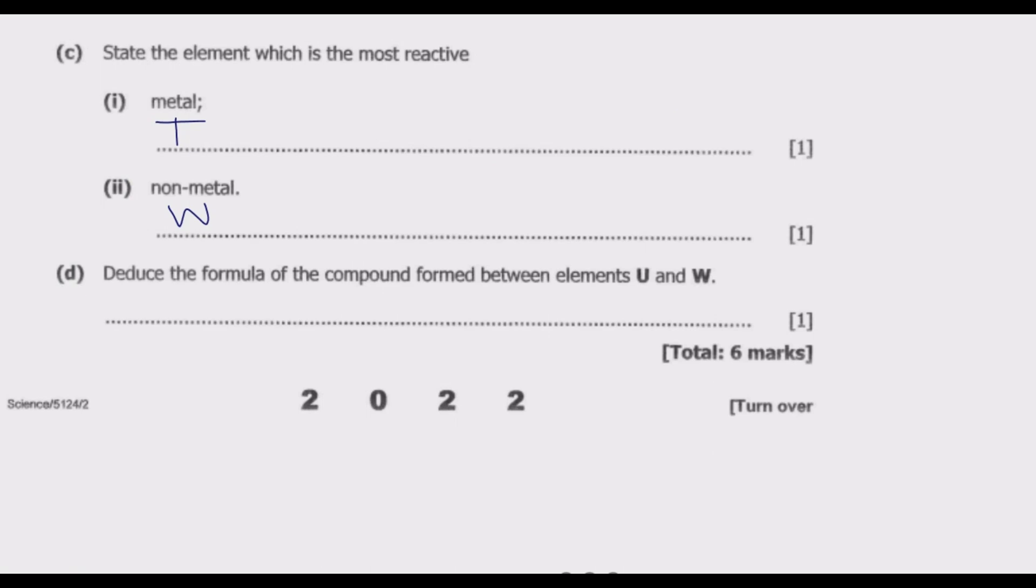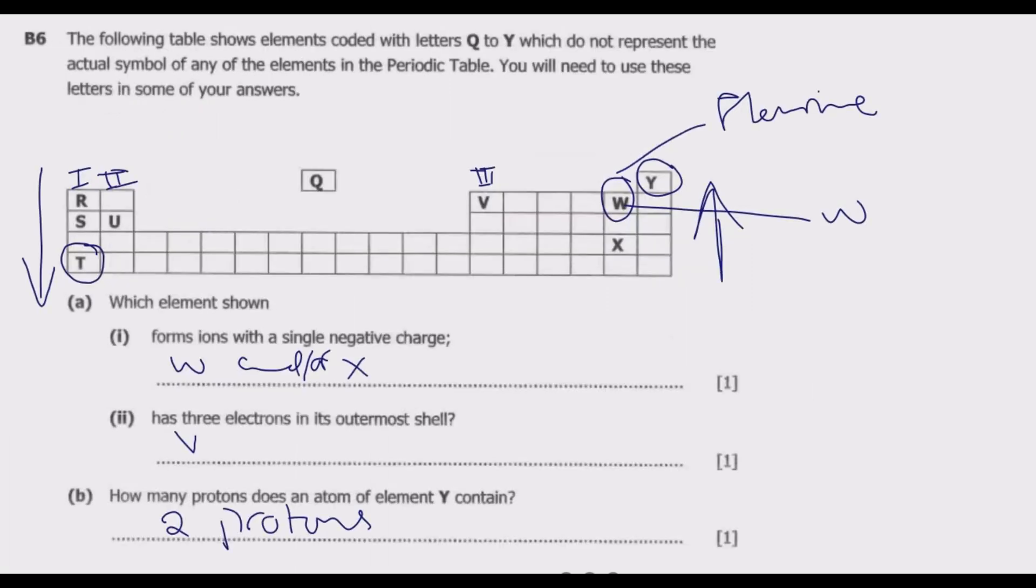We look at question D: Deduce the formula of the compound formed between elements U and W. So what is U? U is basically a group 2, so group 2 meaning U has a valence of 2. It's willing to give away two electrons to have a complete outermost shell. Then W is willing to get one additional electron to complete its outermost shell. So what you do to deduce the formula, you cross the valences.